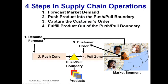Secondly, that demand is used to get material, make products, and push those products into a physical inventory location called the push-pull boundary. Thirdly, we have to capture the customer order — and that's pretty hard over the Internet because orders are not necessarily sticky; with one mouse click you can be off to somebody else's website and lose the order. But we have to capture the order. And finally, we go into the push-pull boundary, pull the actual product against the customer order, and fulfill it to the customer wherever they are. So: forecast, push, order capture, and pull.